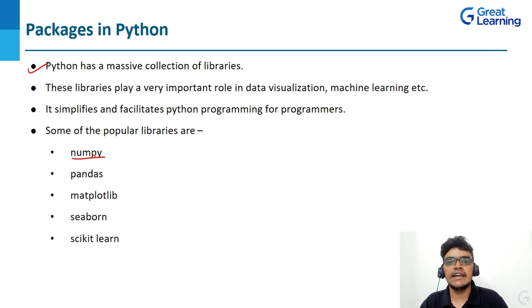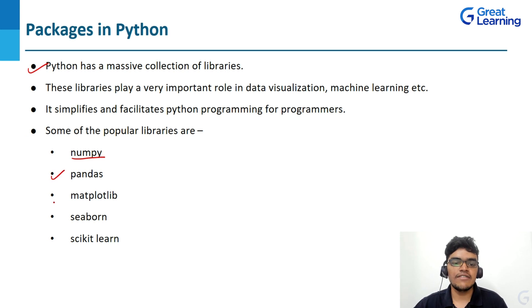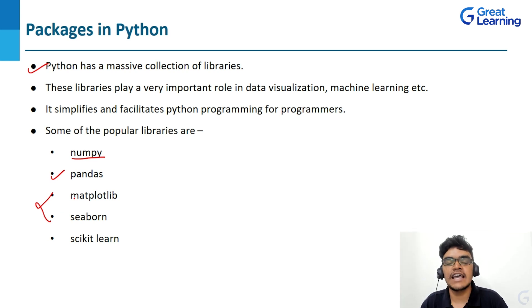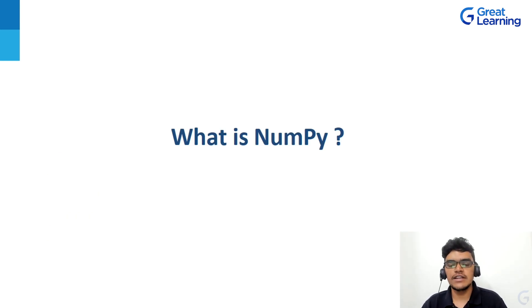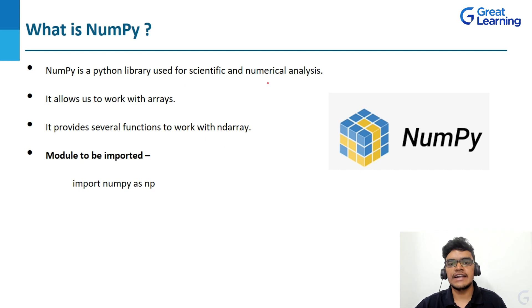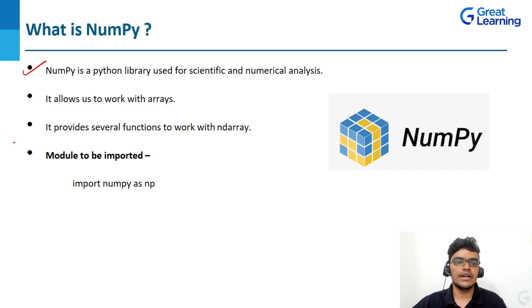NumPy also provides mathematical operations on arrays. Pandas is mainly used for data analysis. Matplotlib and Seaborn are libraries used for data visualization. scikit-learn is a very useful library for machine learning. NumPy is a Python library used for scientific and numeric analysis. If you want to perform any mathematical operation or work with multidimensional arrays, you can use the NumPy library.